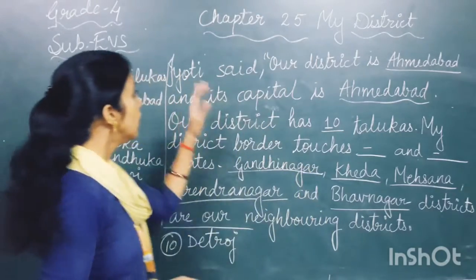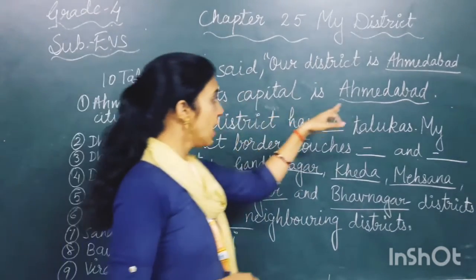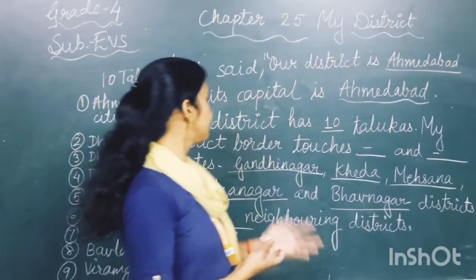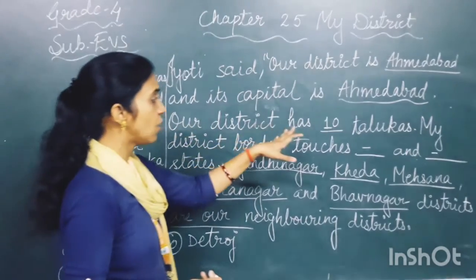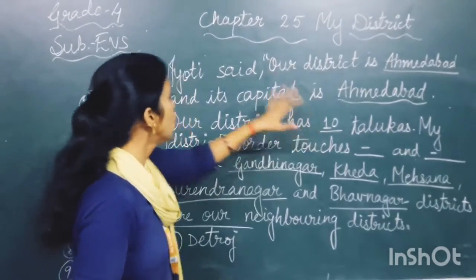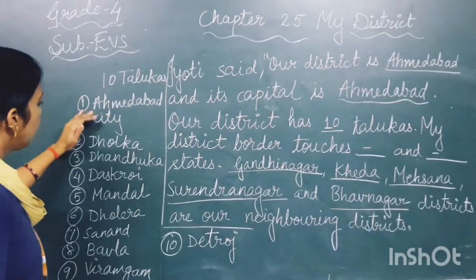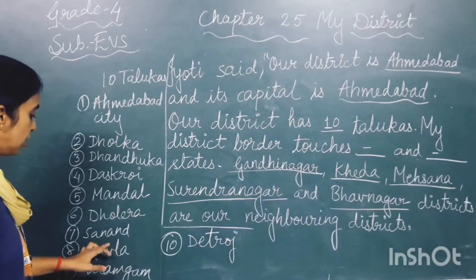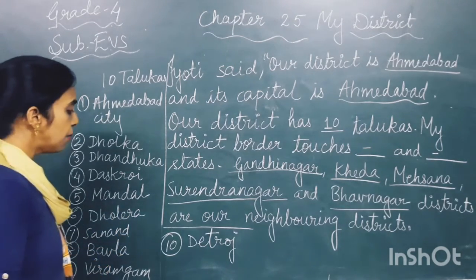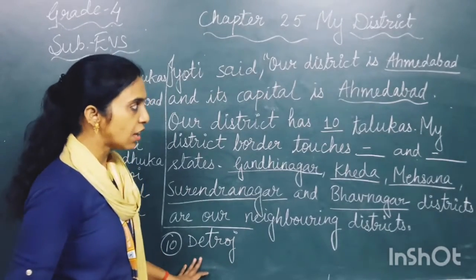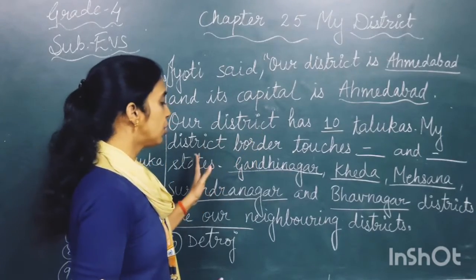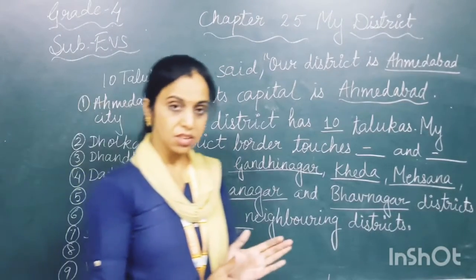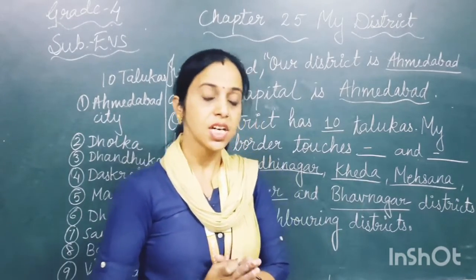After listening to Viswa, Jyothi said: our district is Ahmedabad, and its capital is Ahmedabad. Our district has 10 Talukas: Ahmedabad City, Dholga, Dhanduka, Daskovi, Mandar, Dholera, Saanand, Bavda, and Viramgaam. My district's border does not touch Pakistan.